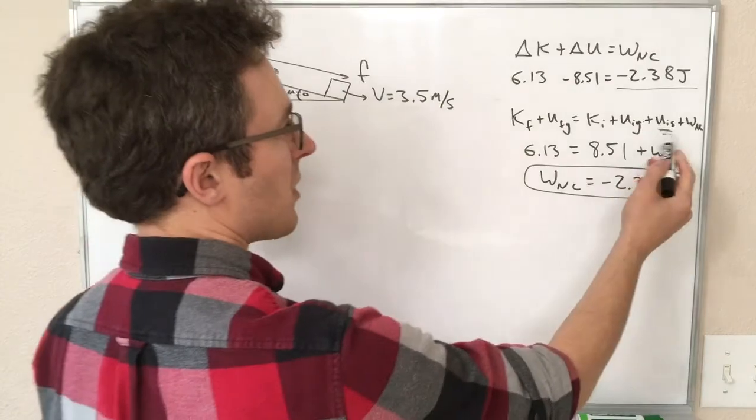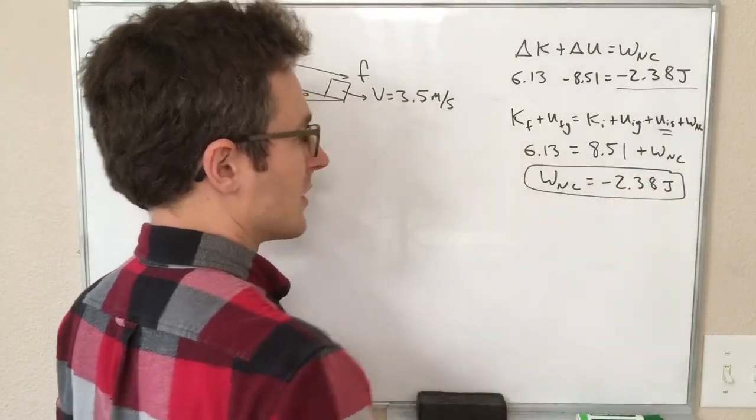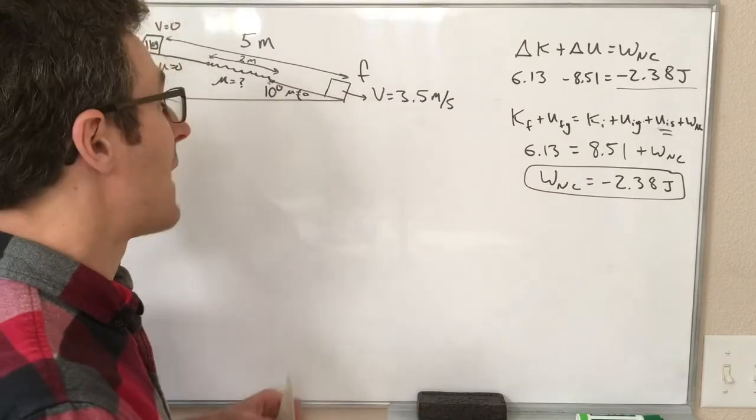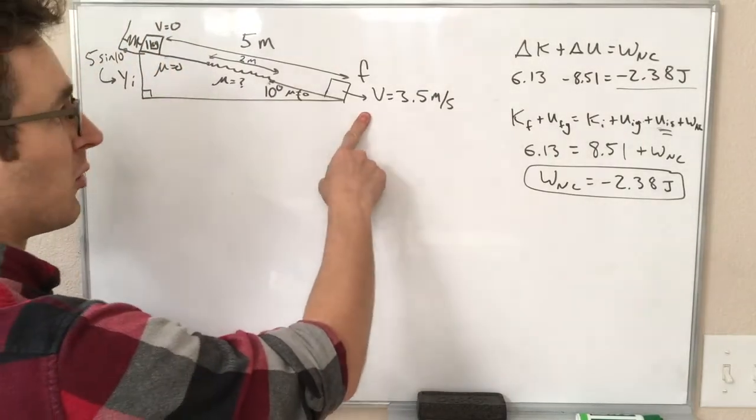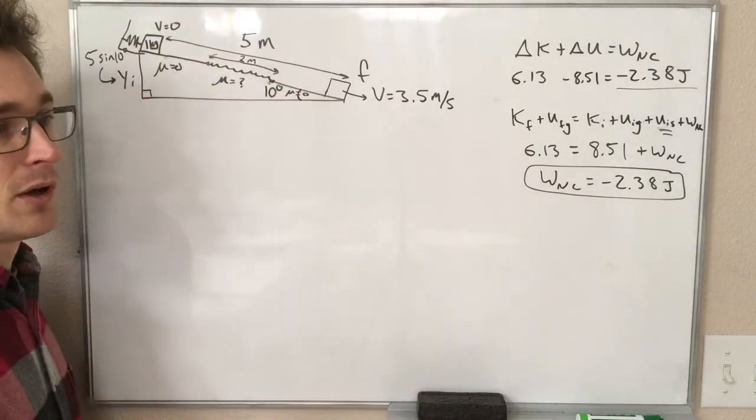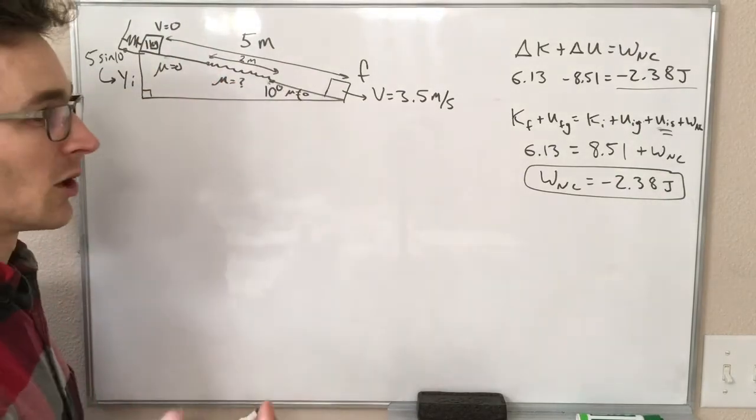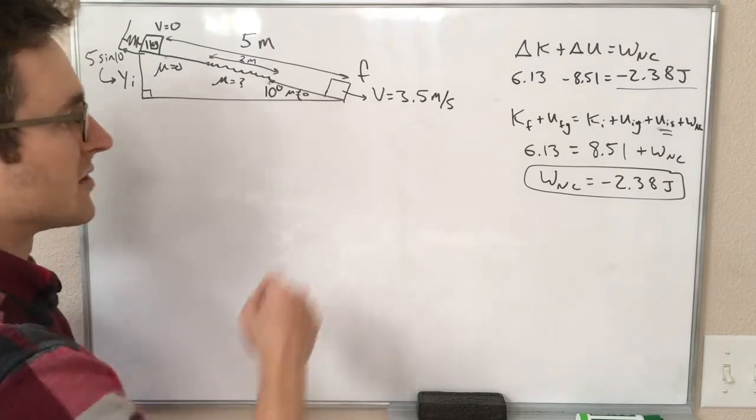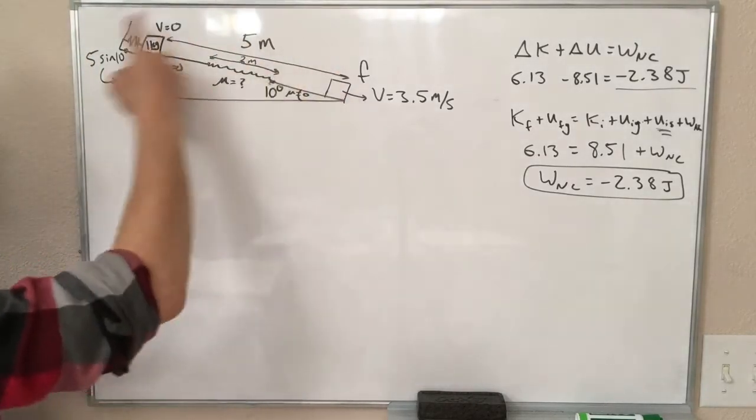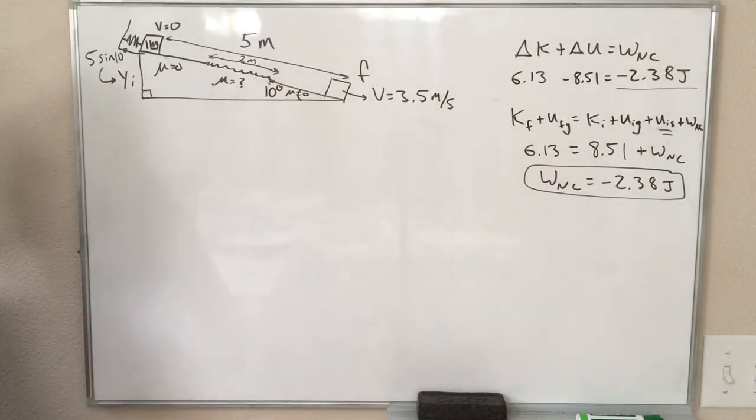And that would, if this was a positive number, that would end up making our non-conservative work a little bigger, like a little bigger in magnitude. Because if it's still only going 3.5 meters per second at the bottom, and we're adding even more energy at the top, then friction must be taking away even more energy to keep it going the same velocity at the bottom. Anyway, that's just one, something like this would be the most complicated mechanical energy problem we would be likely to have.